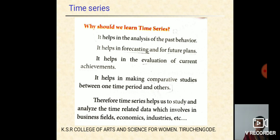For example, the production of a product, cost of a product, sales of a product and national income, salary of individuals, and etc. These are the examples for time series. By close observations of time series data, one can predict and plan for future operations in industries and other fields.